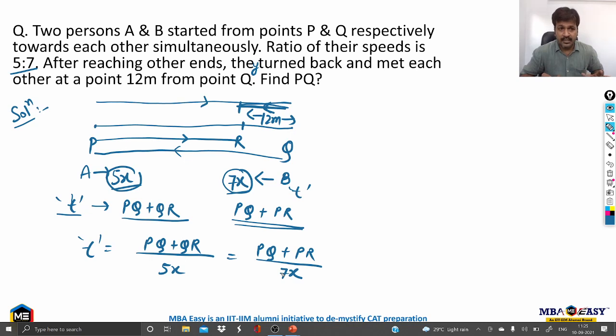In some questions, distance traveled by two persons will be same. So, in that case we equate distance. Distance is speed into time. So, speed 1 into time 1 is equal to speed 2 into time 2. Similarly, many questions will have speed constant. Speed is distance by time. So, we can say distance 1 by time 1 is equal to distance 2 by time 2. This is how we frame equations for many questions in time, speed, and distance. You first figure out which variable is constant for two persons and then we equate that constant variable. Here time is equal for both A and B. So, we are equating time of travel of A with time of travel of B.